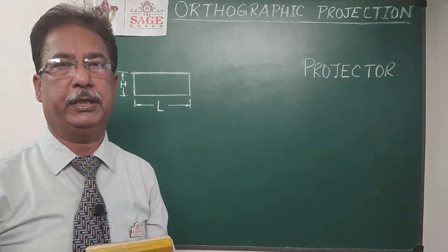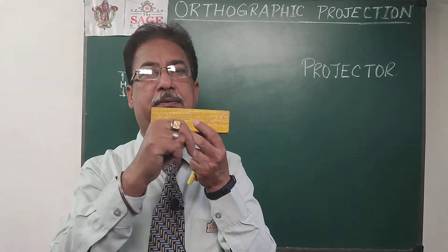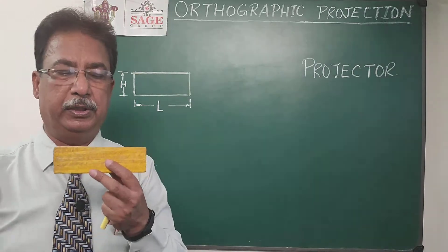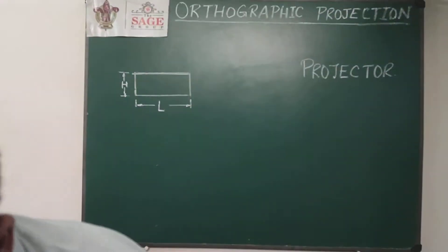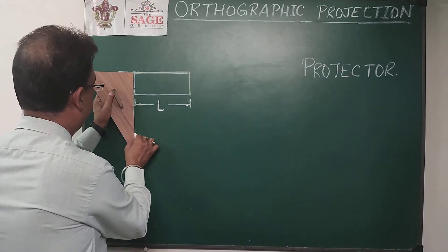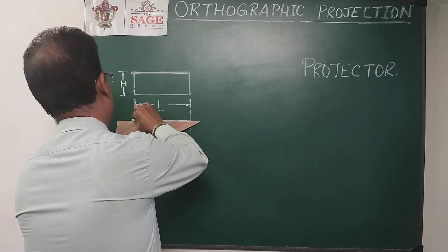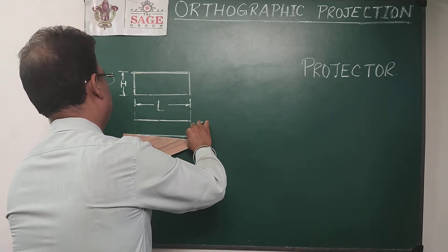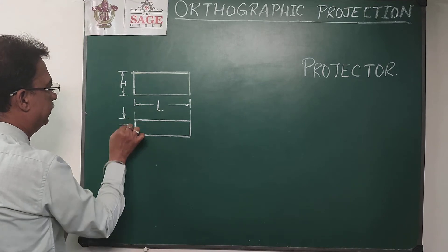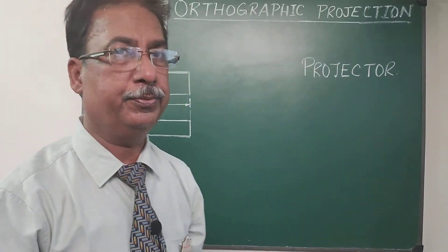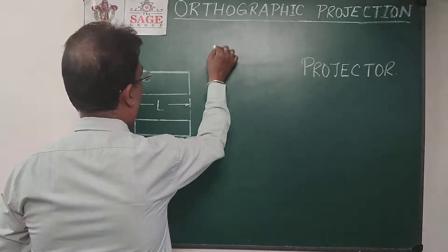So what we will do is draw another projection of the same object. Earlier I looked at it from the front and got the front view. Now if I look from the top, I get the length and this time also the thickness T. So just below the front view figure, I can draw another figure — the top view of the same object. This way we get the thickness T. Normally in orthographic projection, we draw a minimum of two projections of any given object.